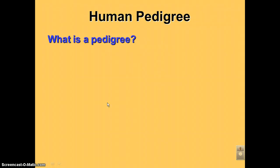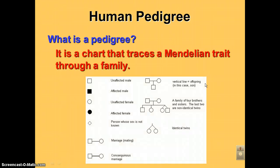Alright, this podcast is going to deal with pedigrees, and this is number three from our chapter 14. So what is a pedigree? It's a chart that traces a Mendelian trait through a family. Most often it's used clinically for the study of genetic disorders, but it could be used to trace really any Mendelian trait.